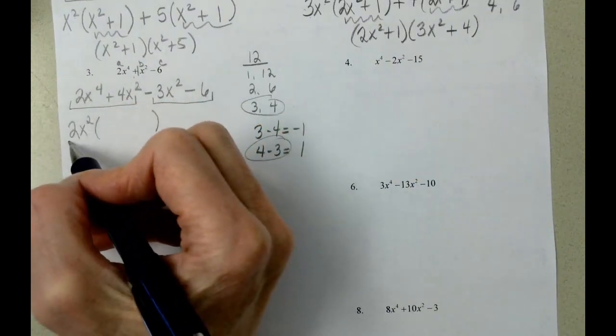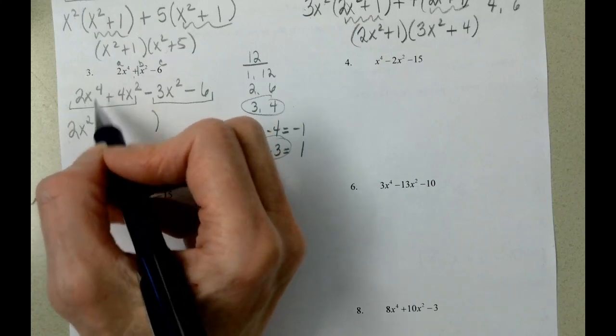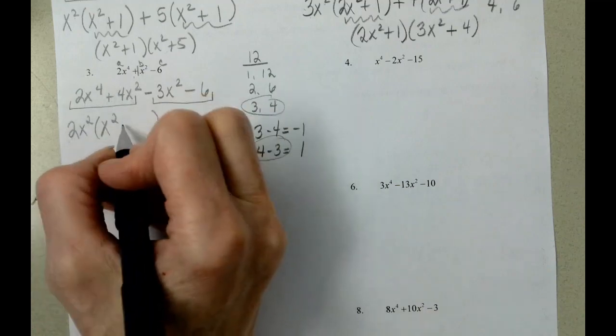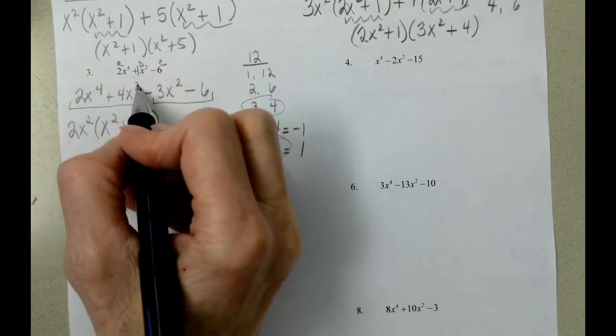2 divided by 2 is 1. We had 4x's. We took out 2. We still have 2. 4 divided by 2 is 2. We had 2x's. We took them out.